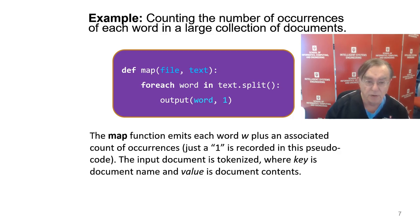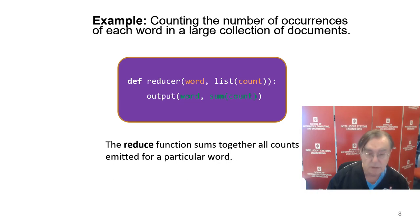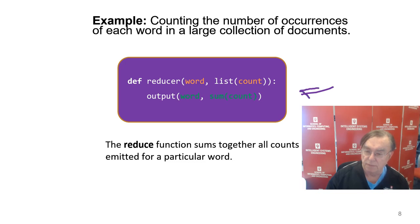Here is a formula — this incredibly simple, trivial function. You look for every word and you split the text. You look for every word in the split text and output for each word the value of the word, which is the key, comma one. Then the reducer sums up the counts of the words. This is a formalization of what we already illustrated in those two examples.